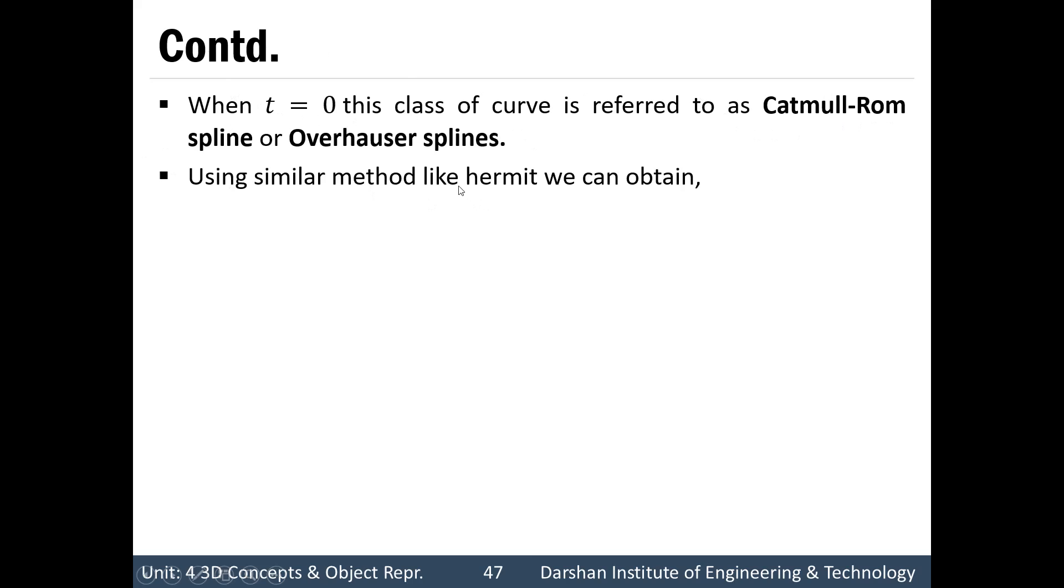Using similar method like Hermit, we can obtain p(u) equals to [u³ u² u 1] times matrix for cardinal spline. And in Hermit interpolation, here it is MH that is matrix for Hermit interpolation. And here in Hermit interpolation, it is having pk, pk+1, dpk and dpk+1. Because in Hermit interpolation, we were providing first order parametric derivative.